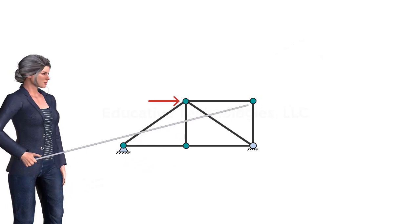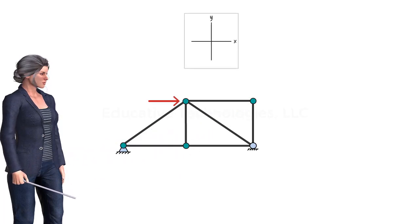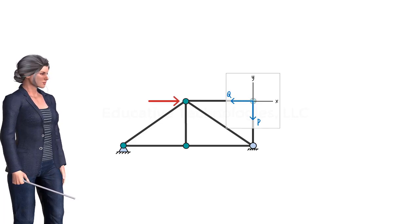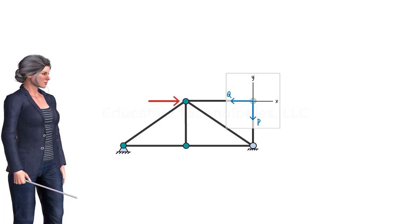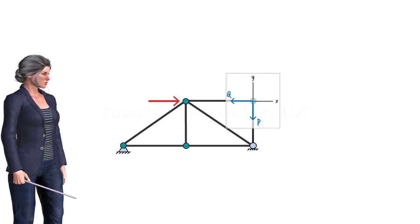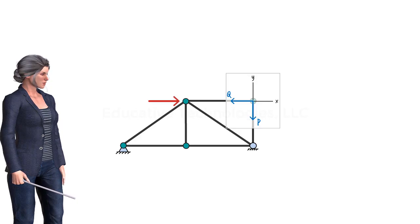Here is another truss joint with only two forces present. We place the coordinate system at the joint and show the forces acting on it. Here, since the forces are acting along the X and Y axes already, there is no need to rotate the coordinate system. The sum of the forces in the X direction must be zero, hence Q equals zero since it is the only force in that direction. Similarly, since P is the only force in the Y direction, its magnitude must also be zero. Let's simplify the truss by removing these zero force members.